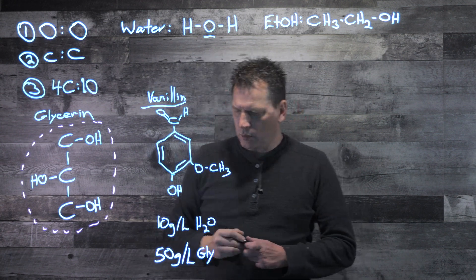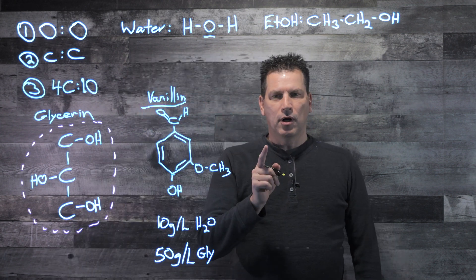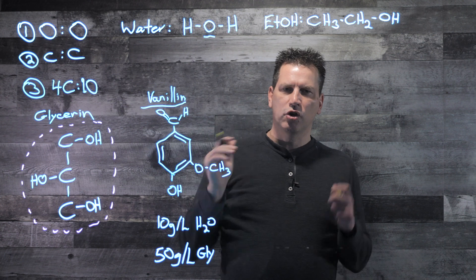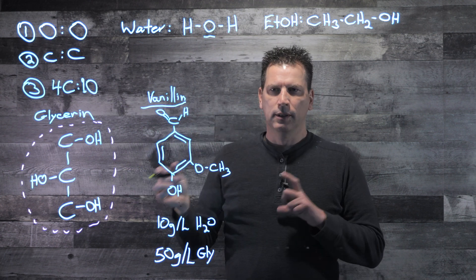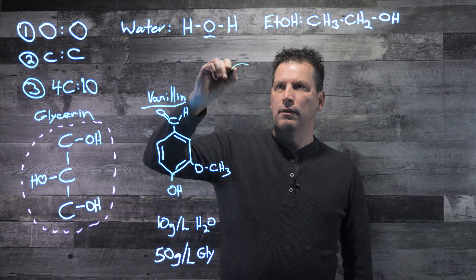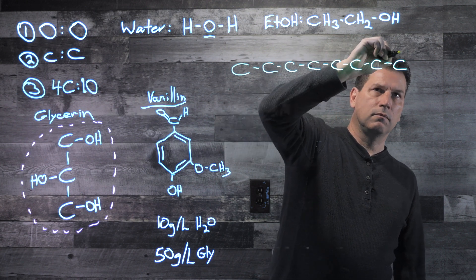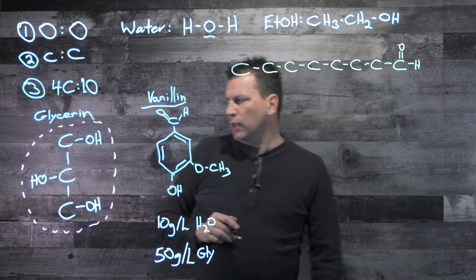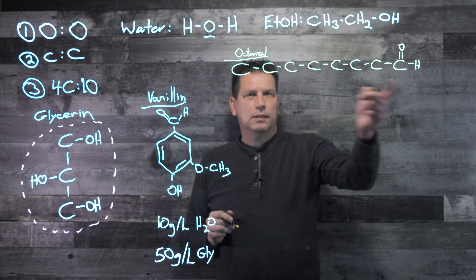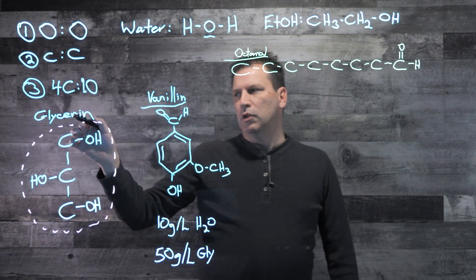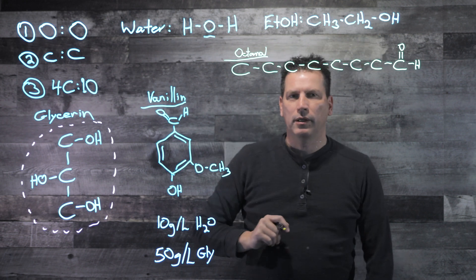Now, if I were to draw you, this is octanol, and it's a chain of eight carbons. If you watched a video on how to make an orange soda, this is one of the key components. So that's octanol. And basically, it's an eight chain carbon. It is not soluble in glycerin. So you're going to get zero in glycerin, but it's fully soluble in ethanol.